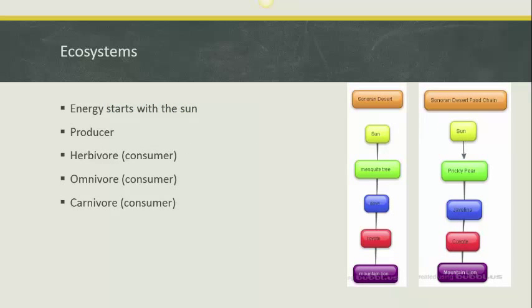So let's look at a couple food chains here. These are food chains for the Sonoran Desert where we live, and all the food chains are going to start with the sun. The sun's energy is going to go into the plants or producers. For the first one we have the mesquite tree, and the second chain we have the prickly pear.